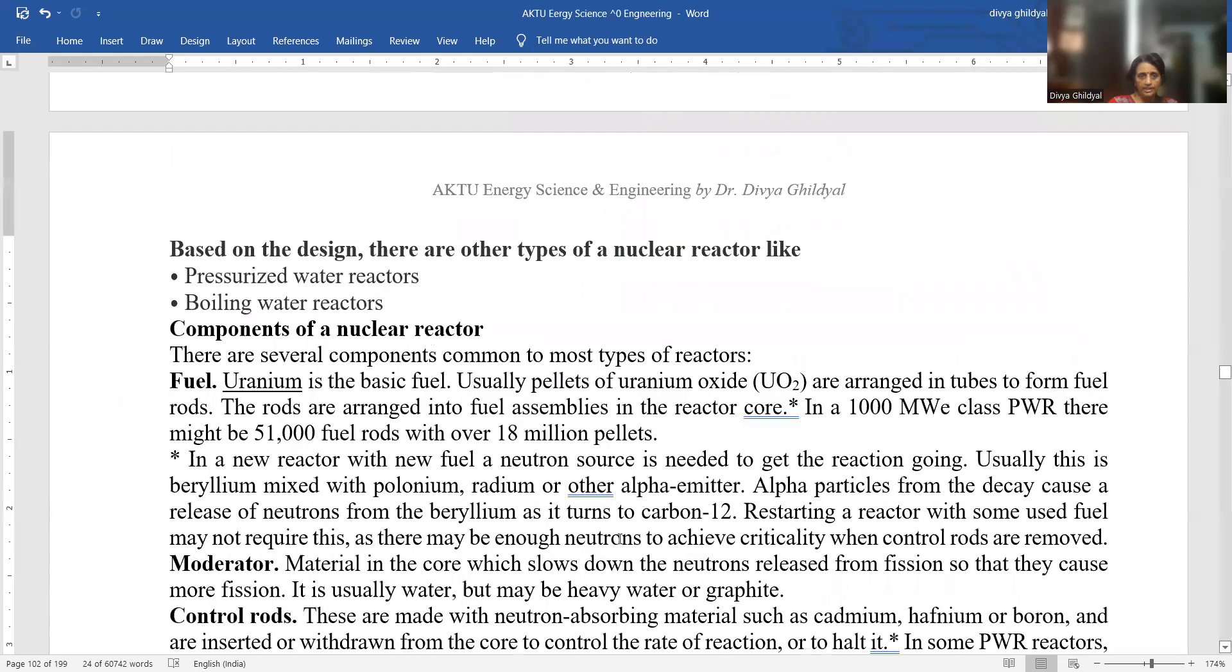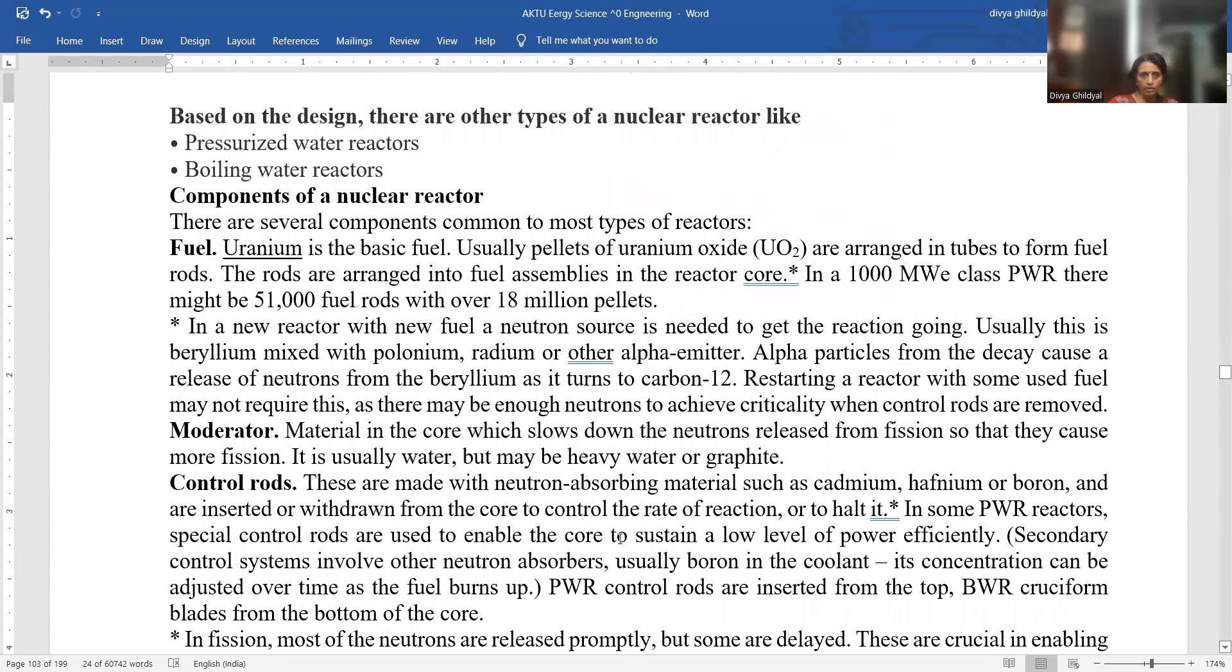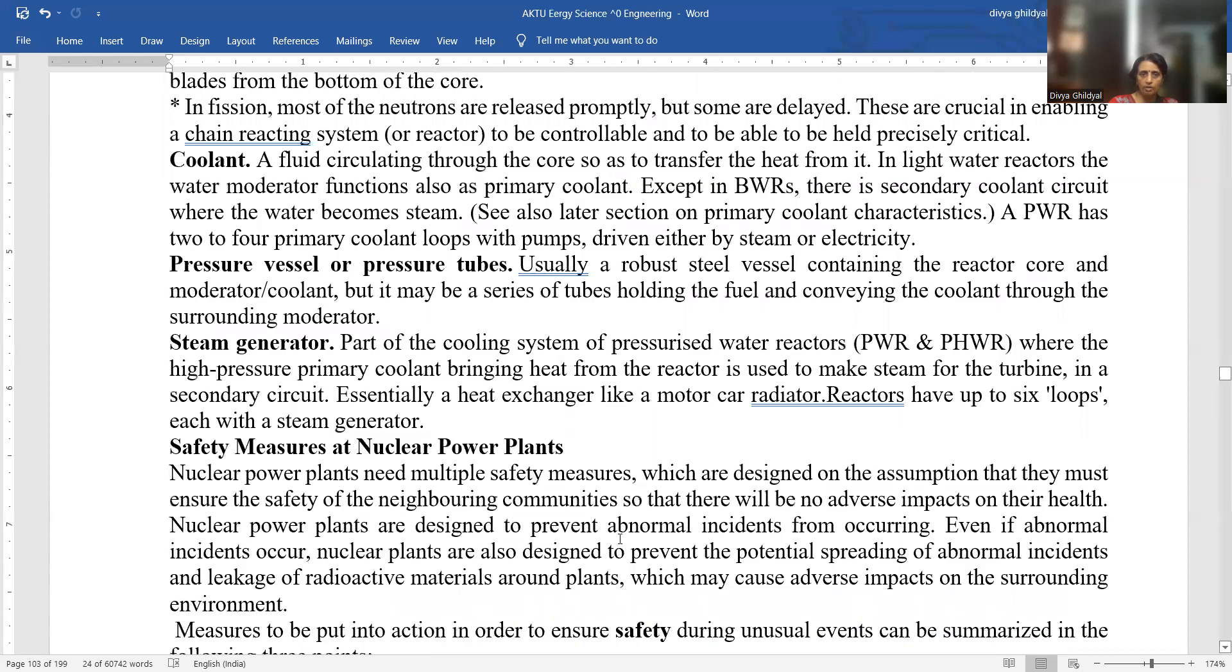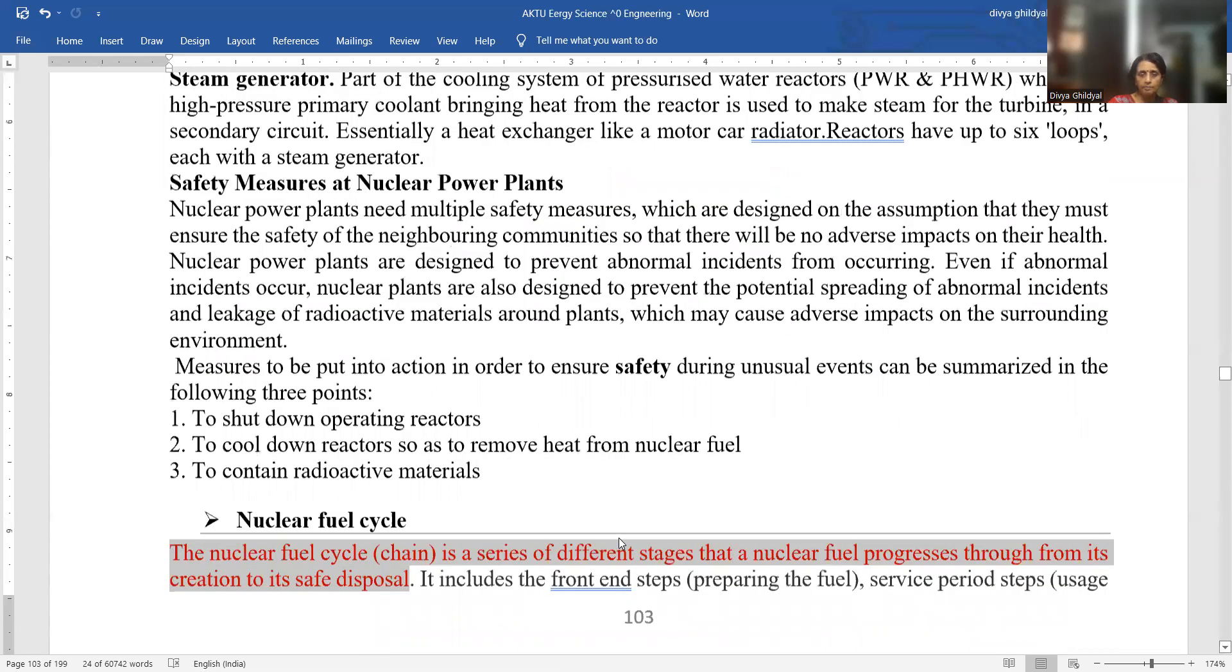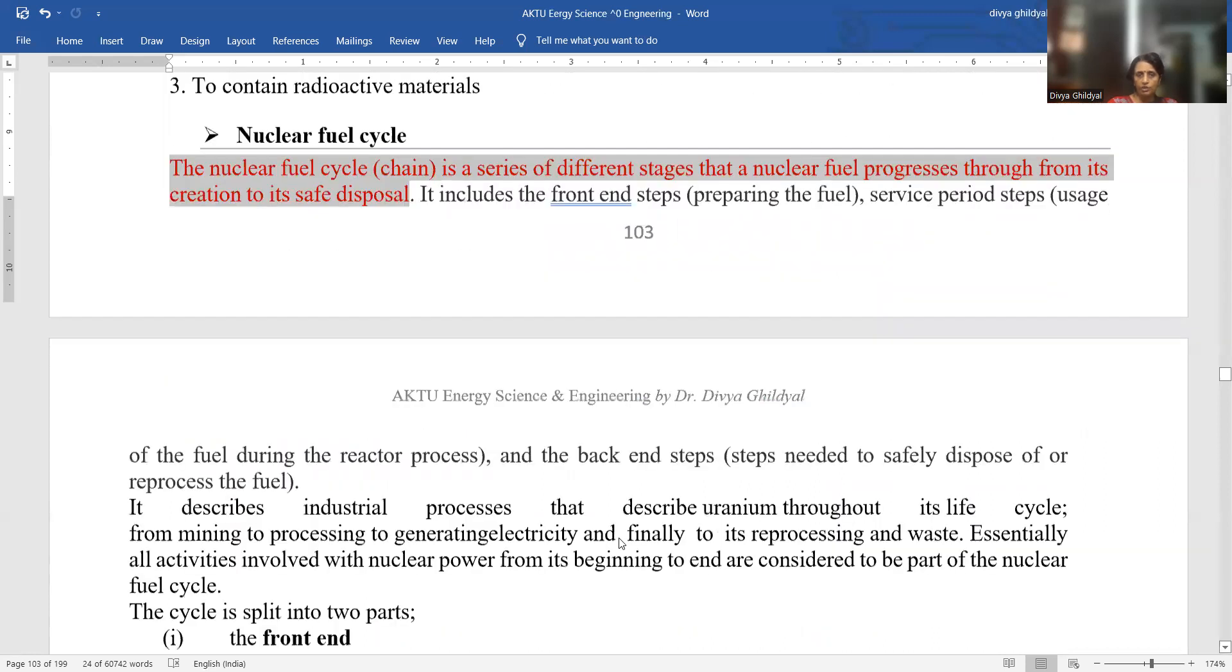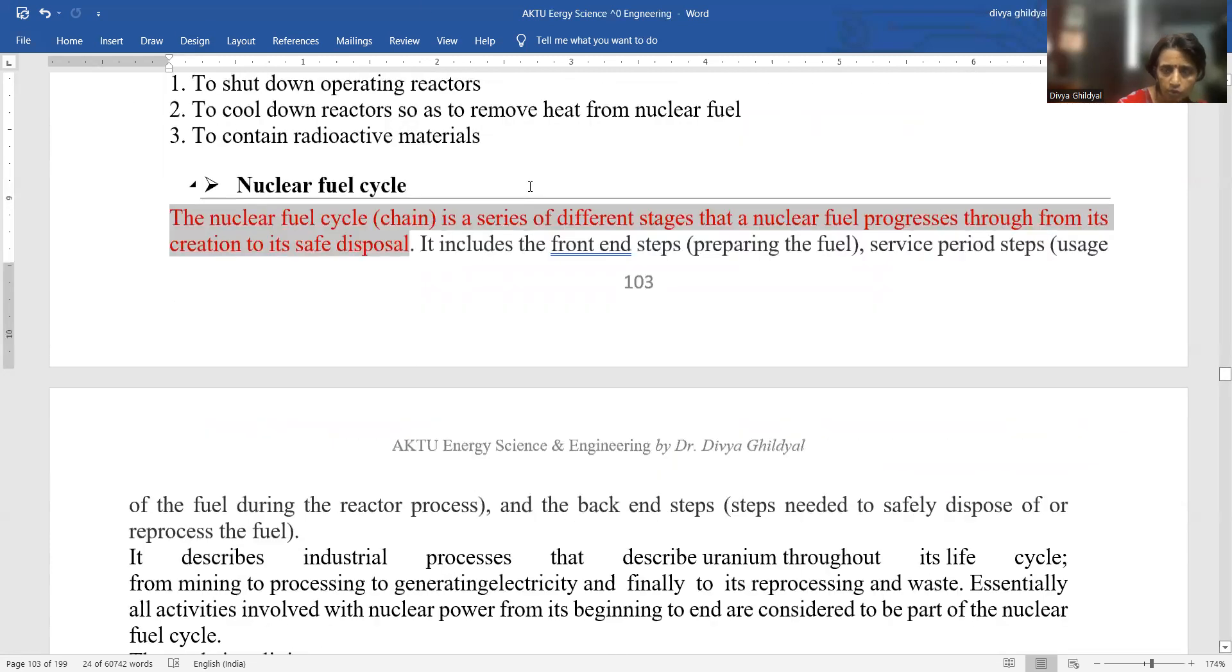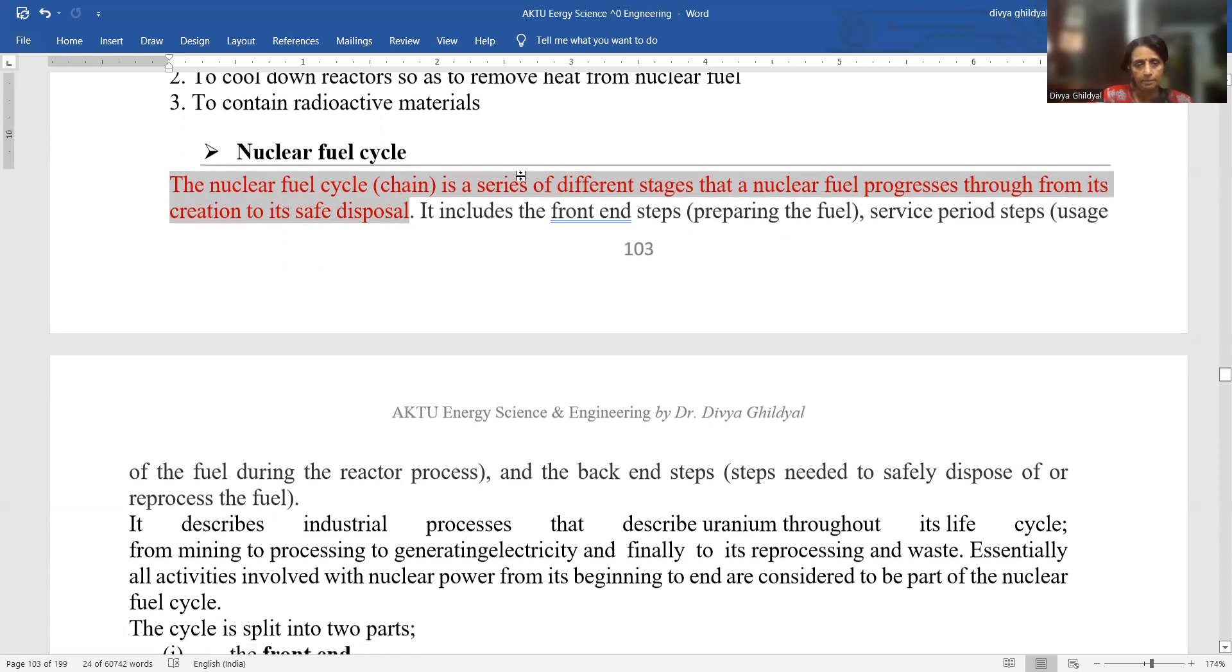Types of nuclear reactors. Nuclear reactor has fuel, moderator, control rod, coolant, pressure vessel or pressure tubes. All this PDF file is available in the drop-down box. Nuclear fuel cycle is a series of different stages that a nuclear fuel progresses through from its creation to its safe disposal. It includes front end steps, service period steps and back end steps.